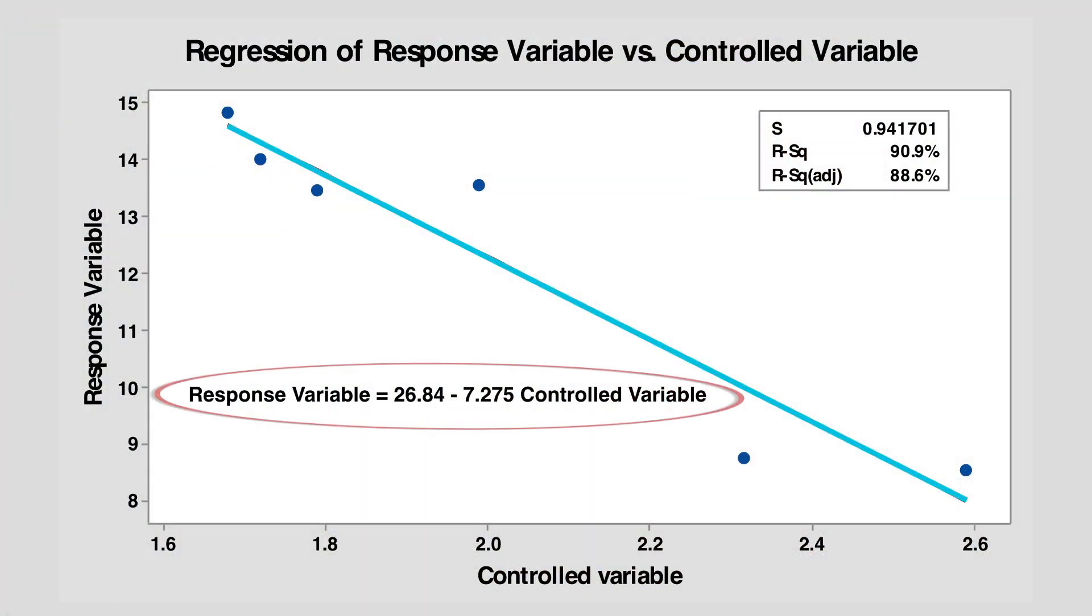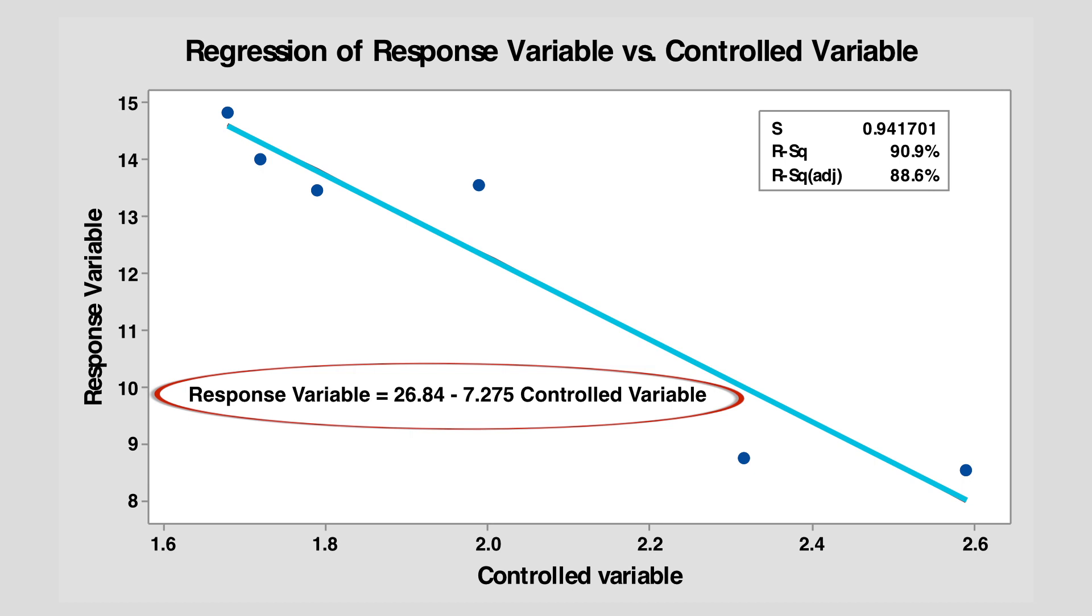Out of this kind of graph we get a couple of different things. One, we get an equation that actually describes that line. So you could say, well, if I had a controlled variable set point of x, what would I expect as my y? So that's really helpful.